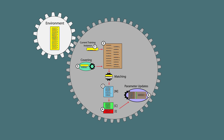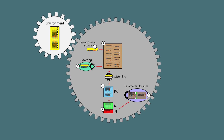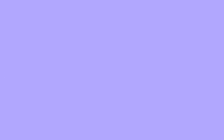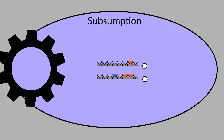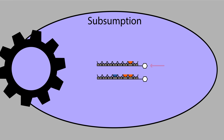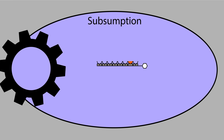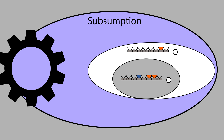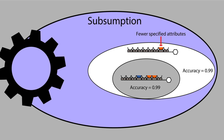Beyond this, an explicit generalization mechanism referred to as subsumption is often applied to LCS. The subsumption mechanism examines pairs of rules and looks for a situation in which one of the rules is a subsumer. A subsumer rule must cover all of the problem space of the other rule, and must be more general as well as just as accurate.